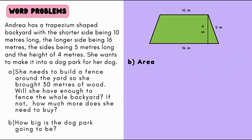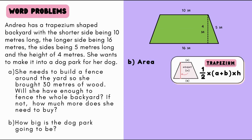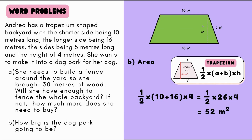Part B asks us to find the area. The area of a trapezium is worked out by half times (a plus b) times height. Putting the numbers into the formula, we have a half times (10 plus 16) times 4. We work out the bracket first: half times 26 times 4, which gives us an answer of 52 meters squared. Therefore, the dog park is going to be 52 meters squared.